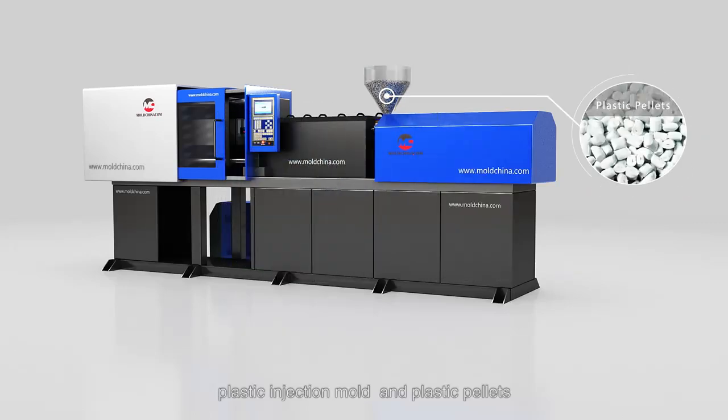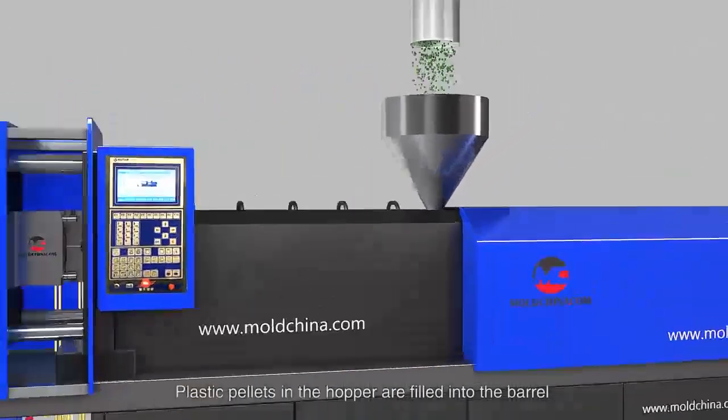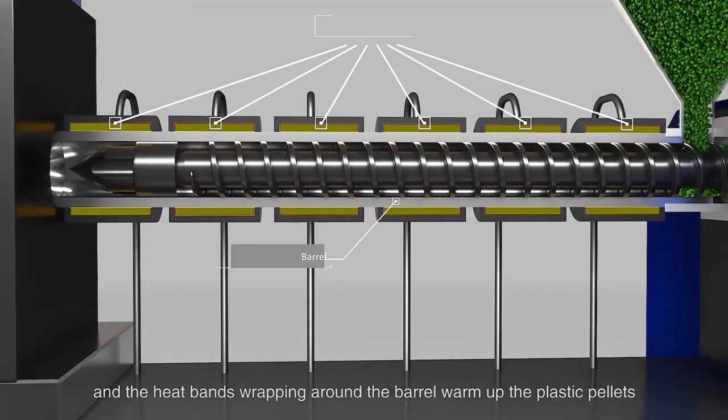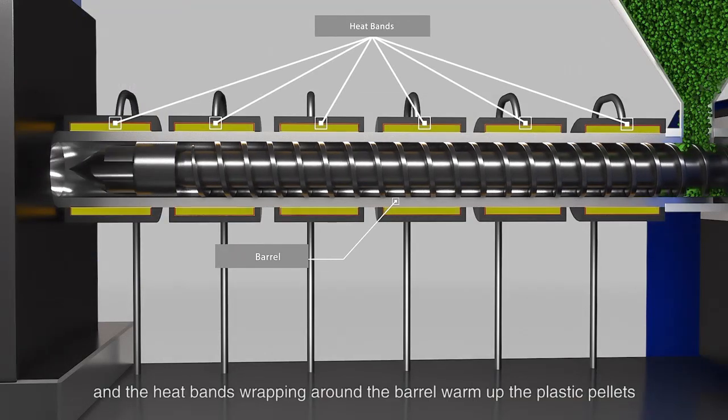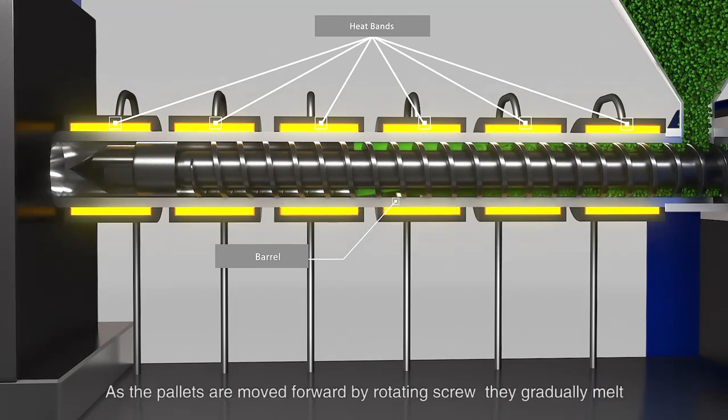Plastic pellets in the hopper are filled into the barrel, then the screw transports the pellets forward. The heat bands wrapping around the barrel warm up the plastic pellets as the pellets are moved forward by the rotating screw.